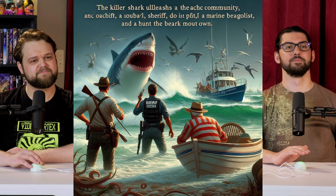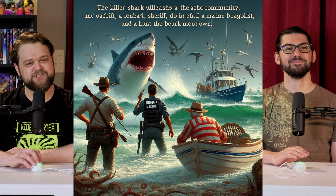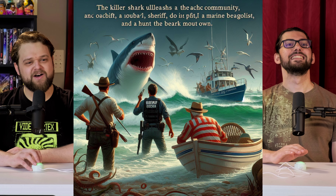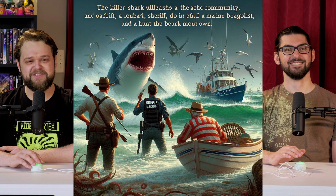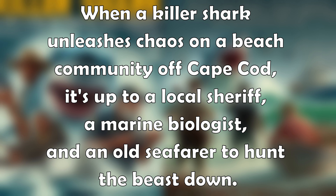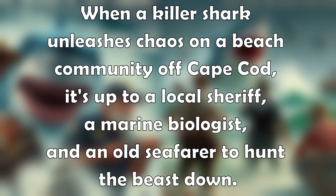Blaine had no comment. Here's what the second image of Jaws would look like — it gave us text, but it's not quite English. The AI-generated text read something like 'The killer shark unleashes chaos, a sheriff, a Marine biologist, and a seafarer hunt the beast down.' That's the prompt I fed into AI — basically the Jaws plot set on Cape Cod.